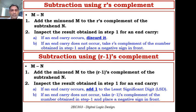In the second approach, using R-1's complement method, we again have two steps for subtraction. In the first step, similar to the previous method, we add the minuend M to the R-1's complement of the subtrahend N.